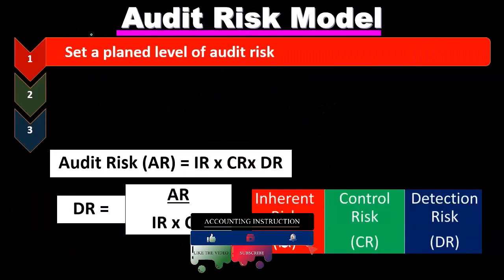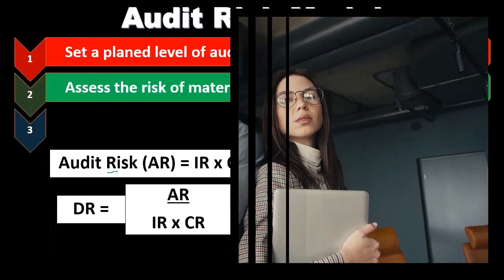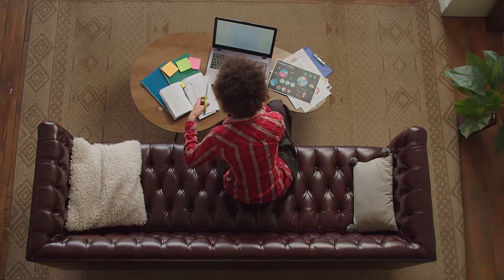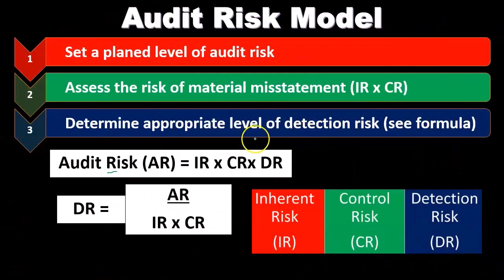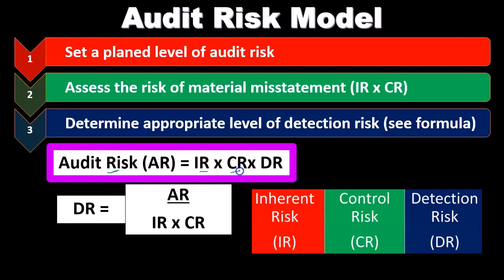The steps in the audit risk model are: first, set the planned level of audit risk; second, assess the risk of material misstatement — which is what the company controls, meaning the inherent risk and control risk; and third, determine the appropriate level of detection risk, which is our responsibility. So the formula becomes: detection risk equals audit risk divided by inherent risk times control risk — DR is what we solve for.